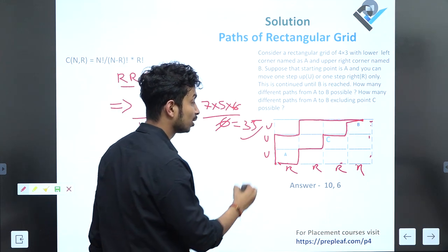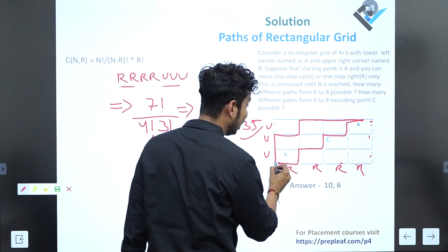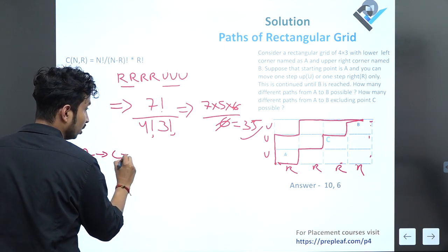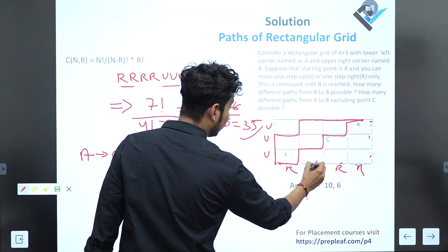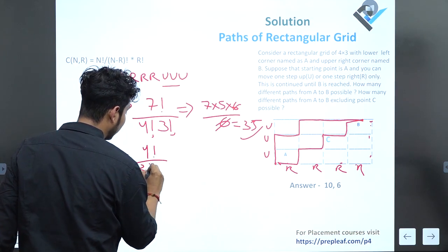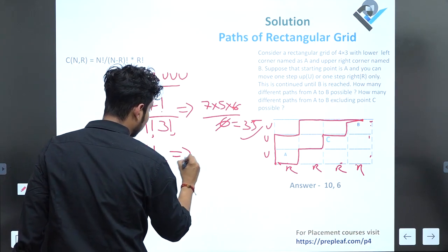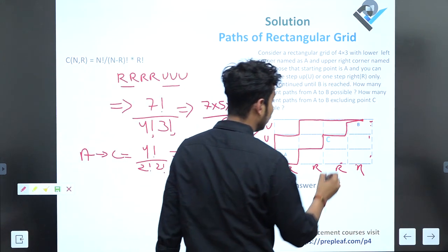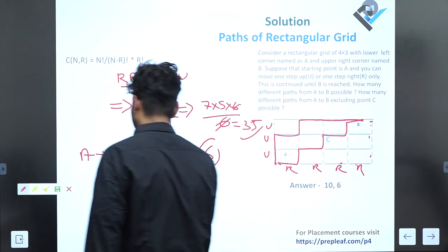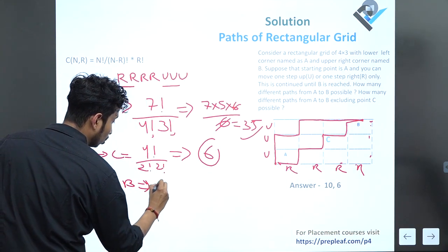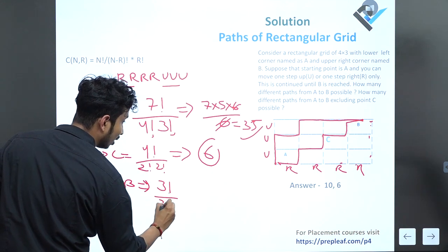Now let's figure out the total number of ways for reaching from point A to point C. 2 right blocks, 2 up blocks. So 4! / (2! × 2!) = 6.